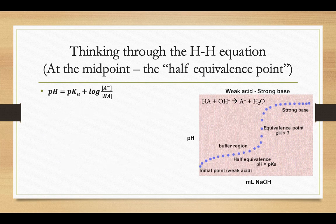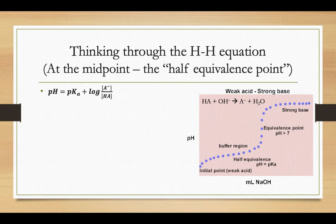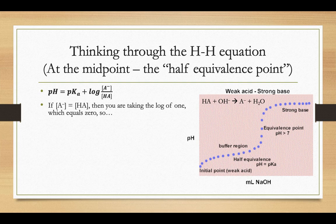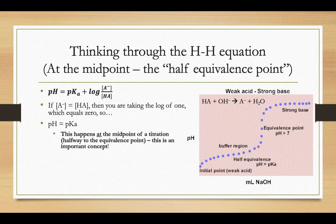What if you're at that half-equivalence point? Then what? Same equation applies, but if it's the half-equivalence point, that means that half of the HA has reacted and turned into A minus, and half of it still remains. So what that means is the A minus concentration equals the HA concentration. And if you're taking the log, when you do A minus divided by HA and you get 1, taking the log of 1, the log of 1 is 0. So your pH is going to equal your pKa. That happens at the midpoint of a titration, halfway to the equivalence point.